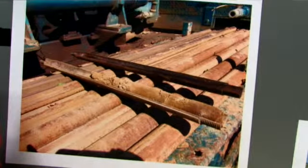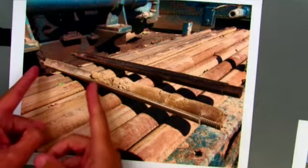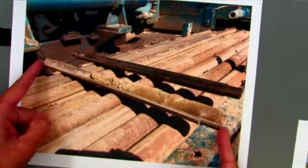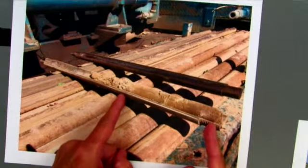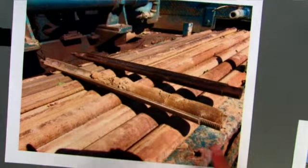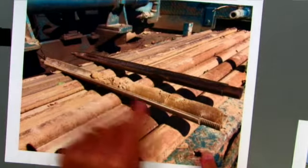So when we do our N values, we measure our blow counts every six inches coming down. So we can actually see that this is a two foot long split spoon sampler. And we can estimate where our change in stratigraphy is. If we have moisture, what are our different soil layers look like? If we have, you know, if we encounter, is it silt? Is it sand?